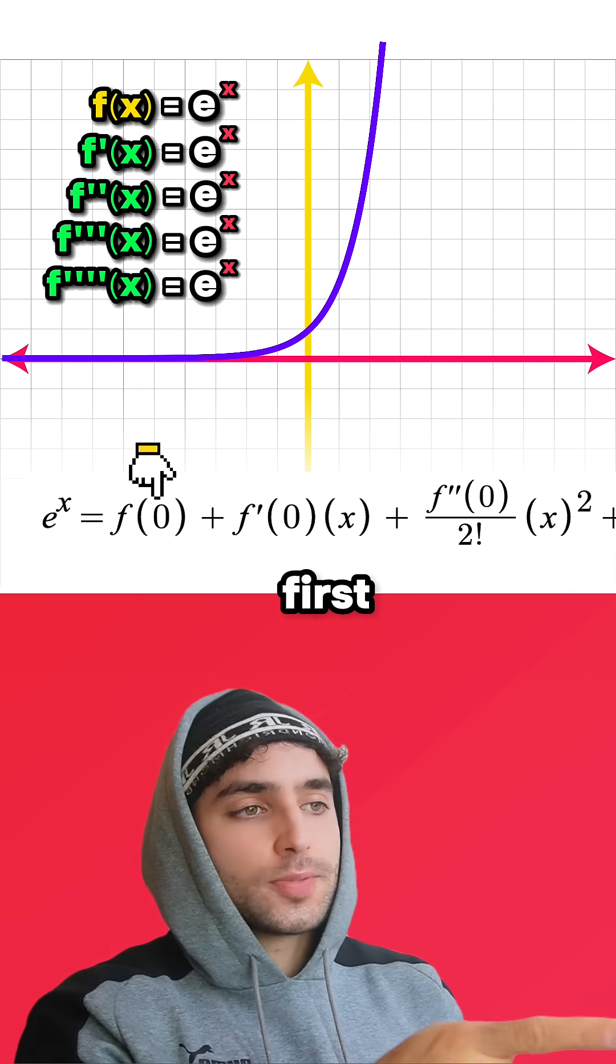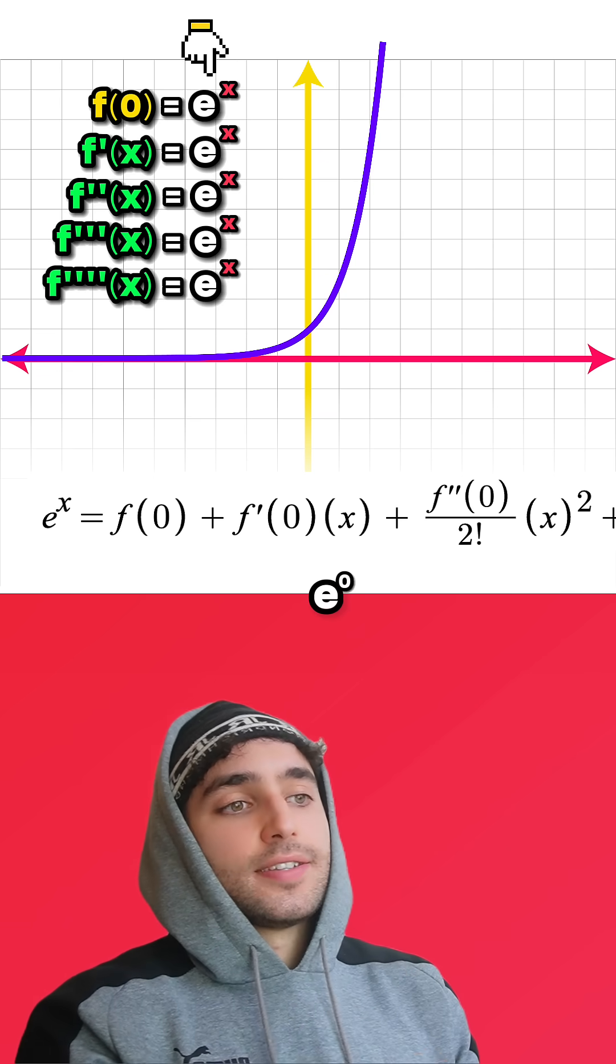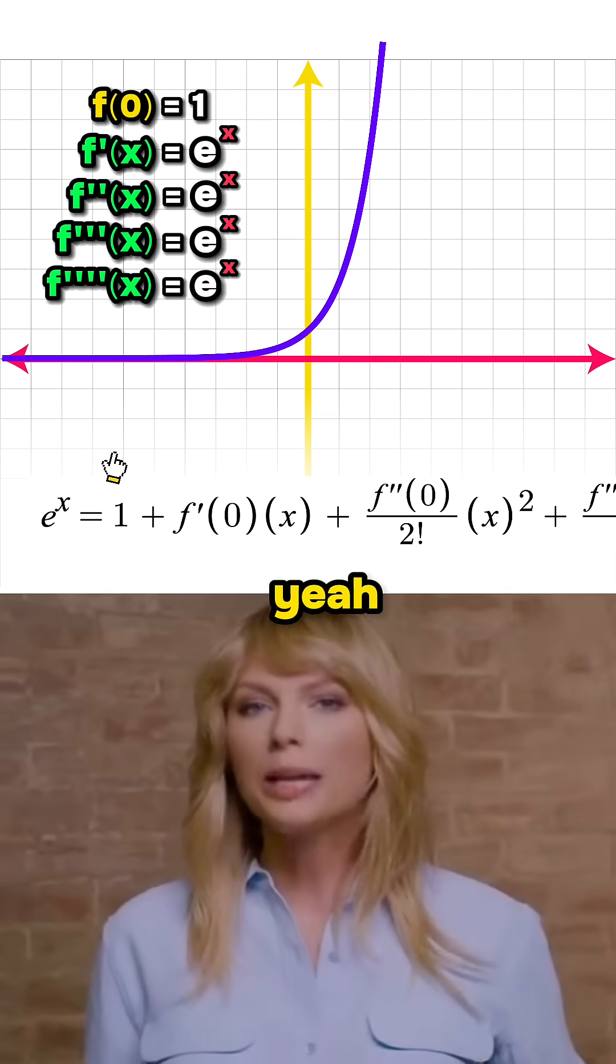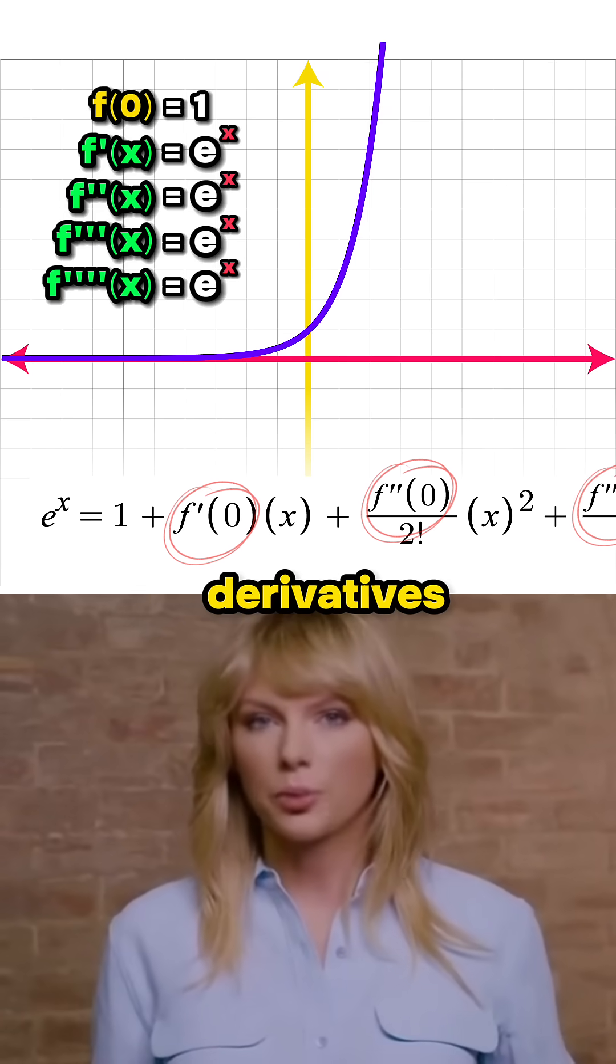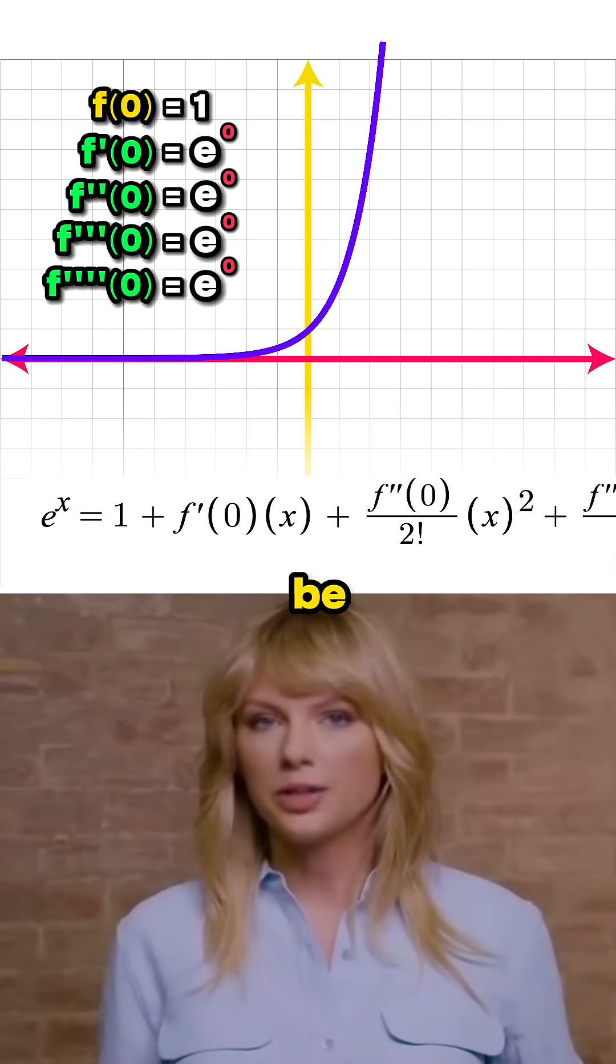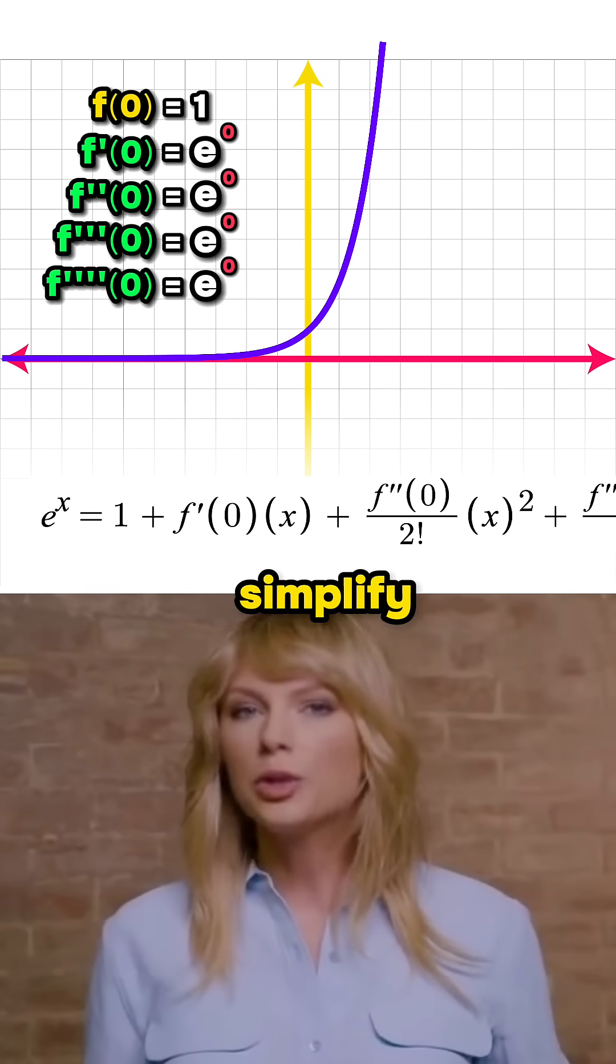and all the others. So for that first bit, f of zero is just e to the zero, which is one, right? Yeah, exactly. And all these derivatives with zero plugged in will also be e to the zero, so they'll also all simplify to one.